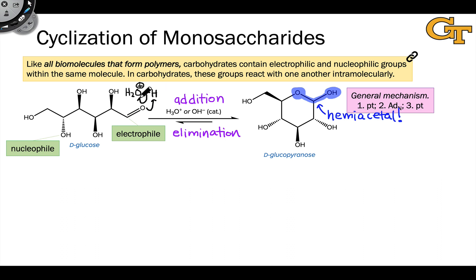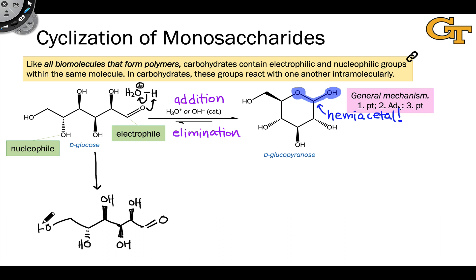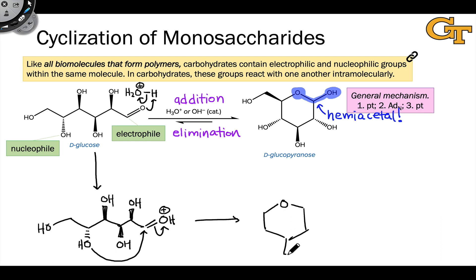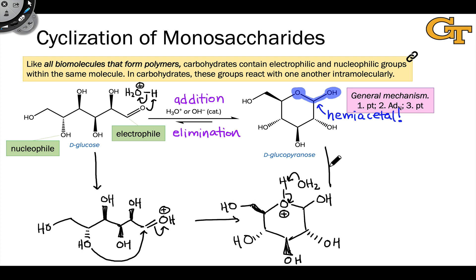In the acid catalyzed mechanism, the carbonyl oxygen is protonated first, then the hydroxyl group adds in an ADN step, and finally the hydroxyl oxygen, which is now positively charged, is deprotonated to give the neutral hemiacetal. Notice that the overall mechanism is nothing more than an acid catalyzed nucleophilic addition step: proton on, the business occurs, proton off.